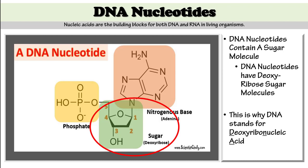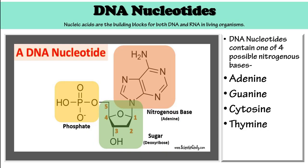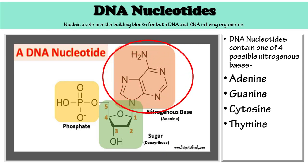DNA nucleotides contain a sugar molecule. The type of sugar molecule they contain is a deoxyribose sugar molecule. This is why DNA stands for deoxyribonucleic acid. DNA nucleotides contain one of four possible nitrogenous bases. The nitrogenous base can either be adenine, guanine, cytosine, or thymine.